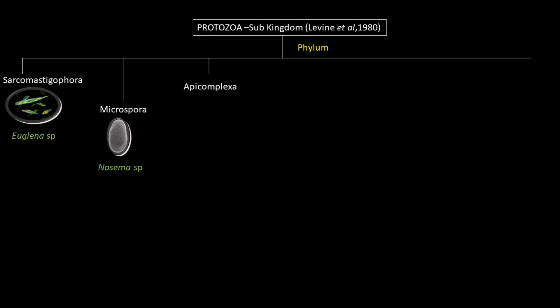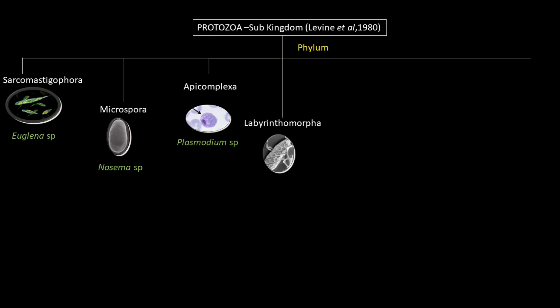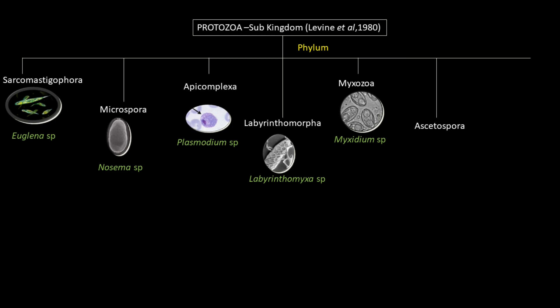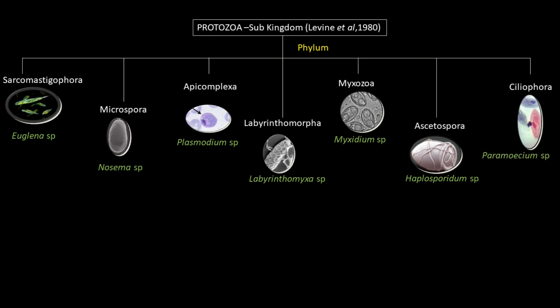Then comes Apicomplexa, with Plasmodium sp. as the malaria-causing agent. Labyrinthomorpha, example is Labyrinthomyxa. Another phylum is Myxozoa, with Myxidium sp. Then Acetospora, with Haplosporidium sp., and finally Ciliophora, with Paramecium sp.